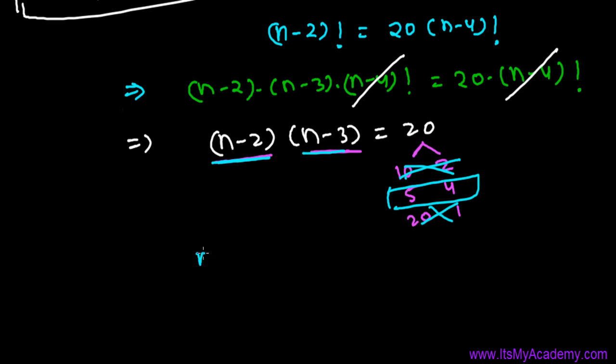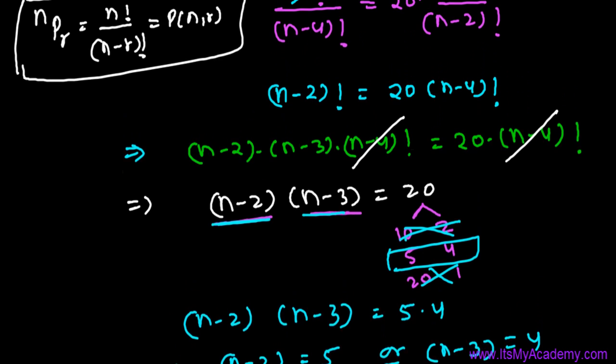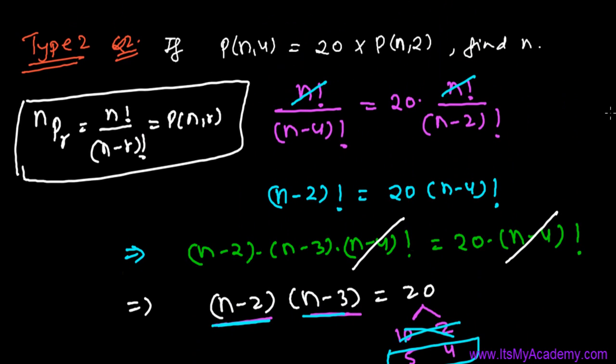So (n-2) times (n-3) equals 5 times 4. By comparing both sides, (n-2) equals 5, or (n-3) equals 4. From both equations you get n equals 7. I hope you understand it, and you'll have to deal with similar types of questions.